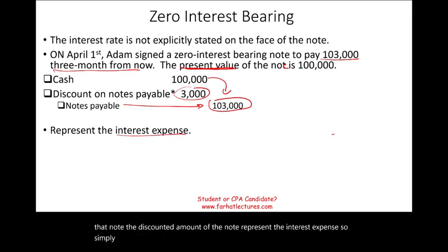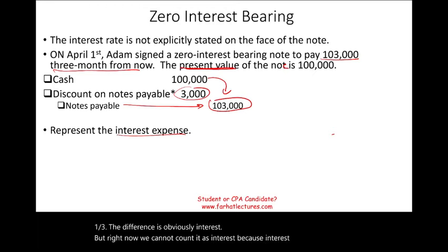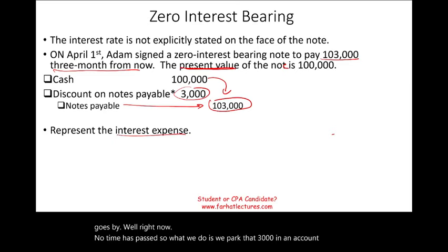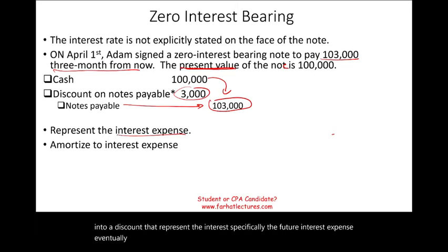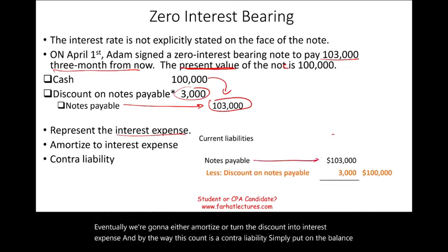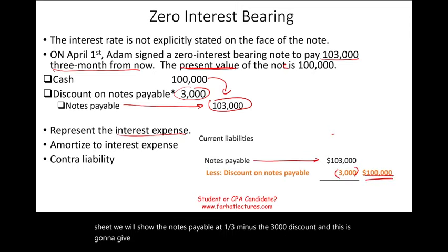The discount on notes payable is a contra liability — it reduces the notes payable on the balance sheet. We cannot record the $3,000 as interest expense immediately because interest is recorded as time passes. So we park it in the discount account representing future interest expense. On the balance sheet, notes payable of $103,000 minus the $3,000 discount gives us the carrying value of $100,000. Eventually the discount is amortized into interest expense over time.